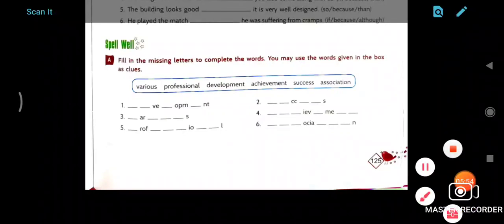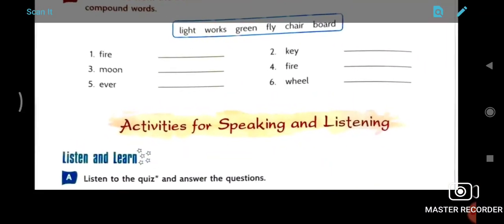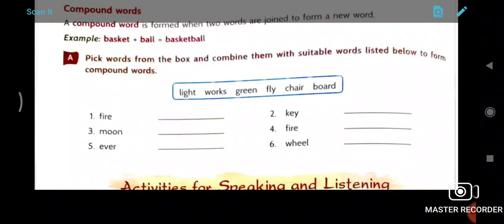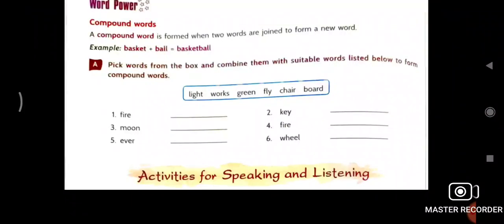Now next step is word power. Compound word. Compound word means that is used to join two words, two new words. Suppose that basket and ball added, then what will be? Basketball. So here some words given, you have to add it and you have to make new words. Six.